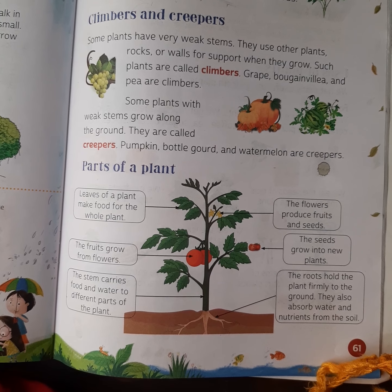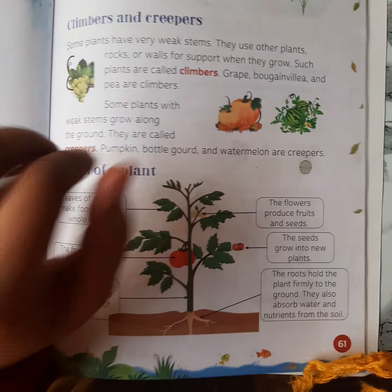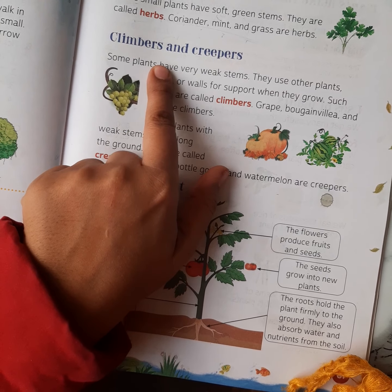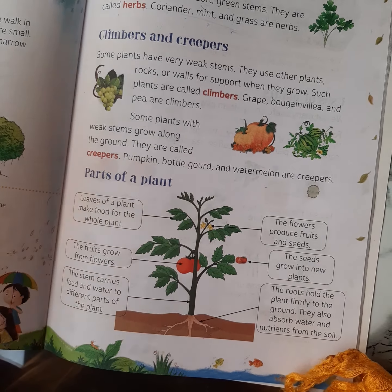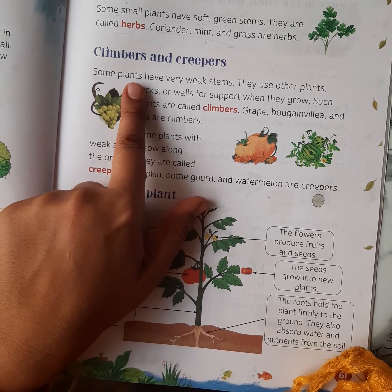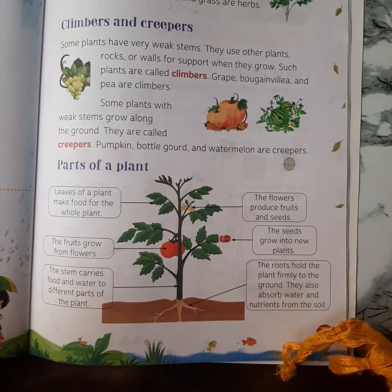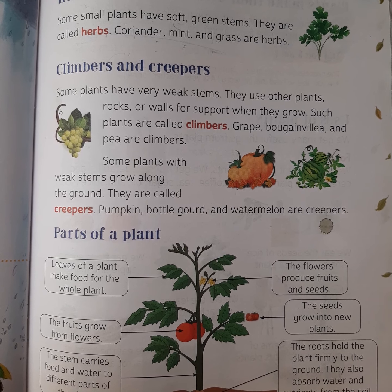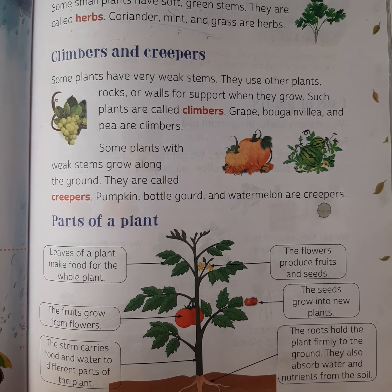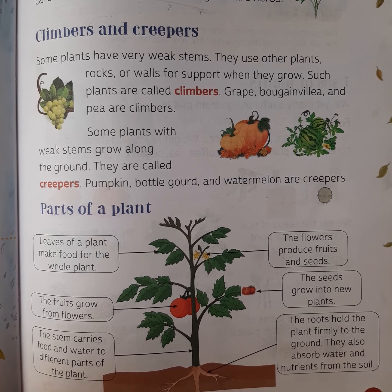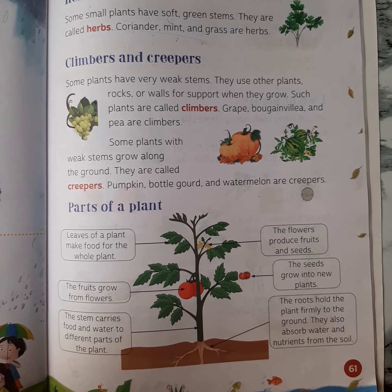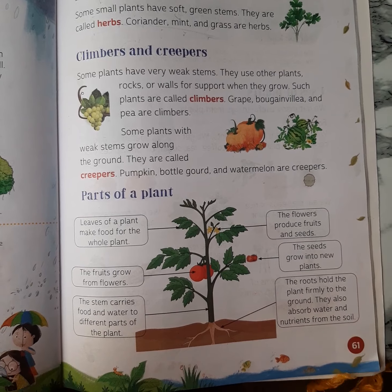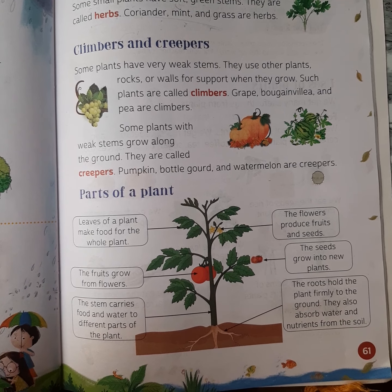What are climbers and what are creepers? Climb means to climb — so plants that climb are called climbers. Creepers are plants that grow on the floor. Now, some plants have very weak stems. They use other plants, rocks, or walls for support when they grow. So there are some plants with such weak stems that without support they cannot grow. These plants are called climbers.